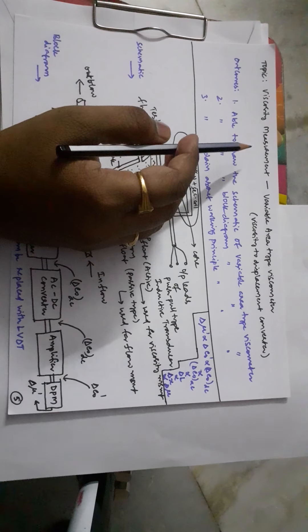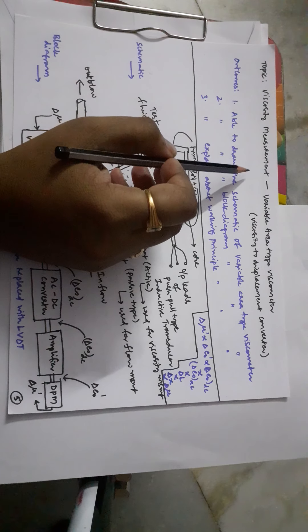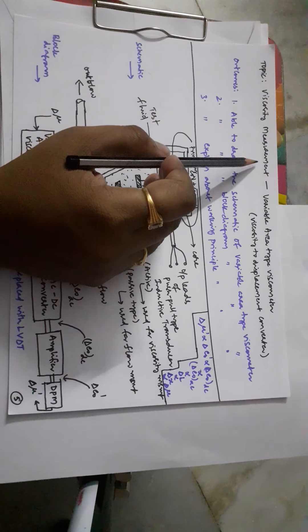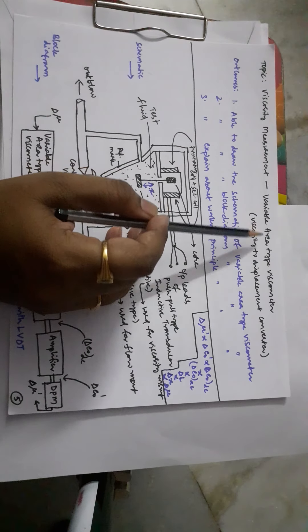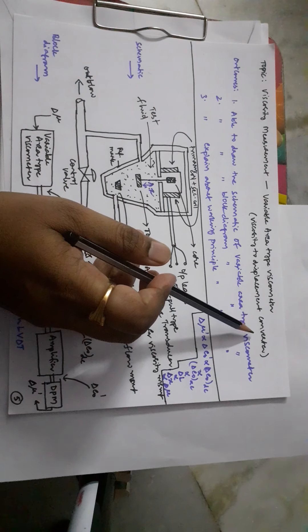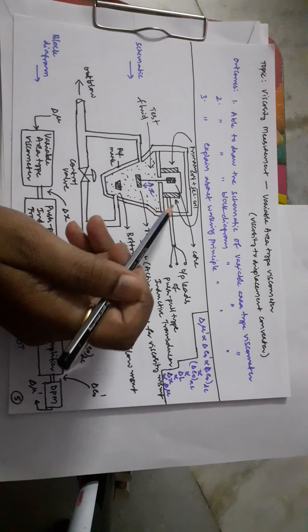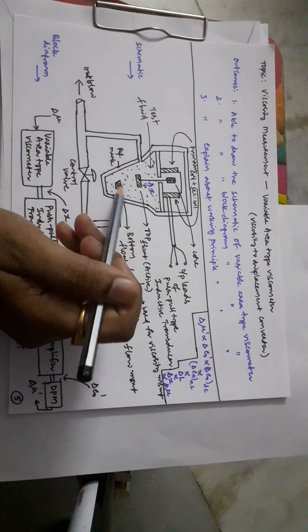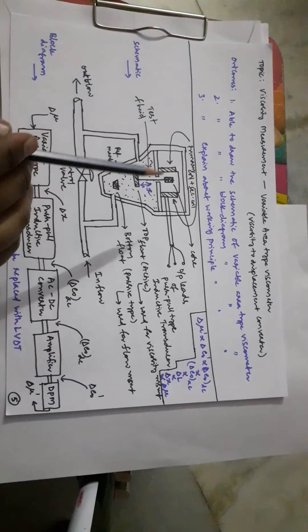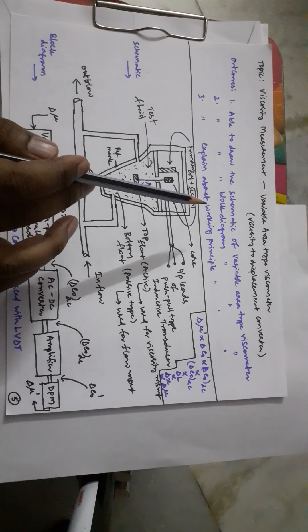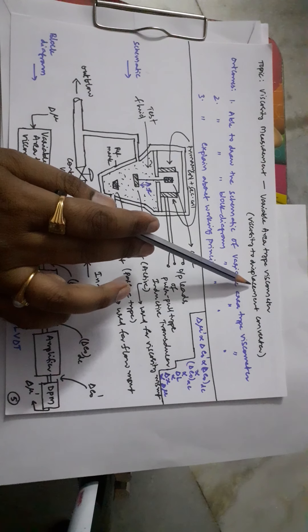In the previous video we saw viscosity measurement using a capillary viscometer. In this video we will see viscosity measurement using a variable area type viscometer, also called a viscosity to displacement converter. Its schematic is similar to the rotameter studied for flow rate measurement, and it converts viscosity energy to displacement energy.